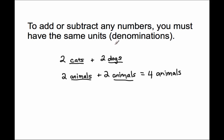The part of a fraction that sounds like and looks like 'denominations' is 'denominators.' So we can only add or subtract fractions if they have the same units — the same denominators.